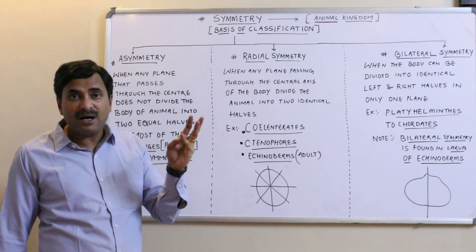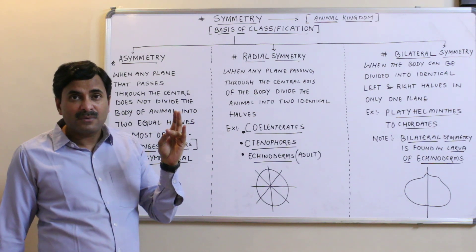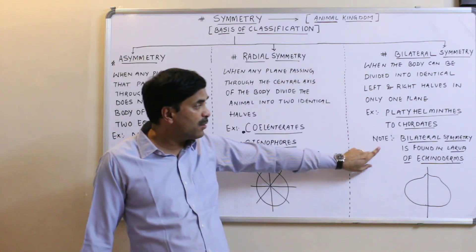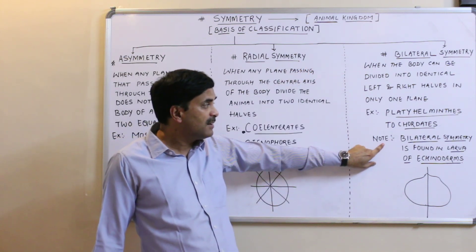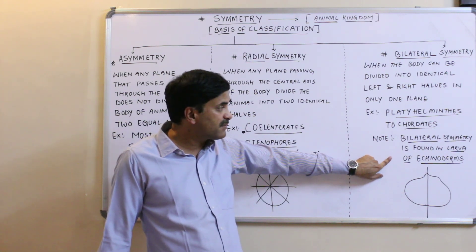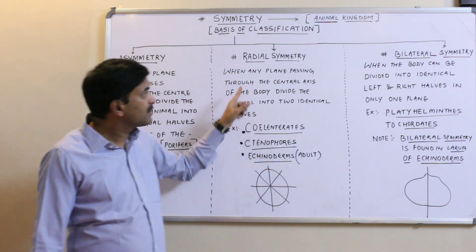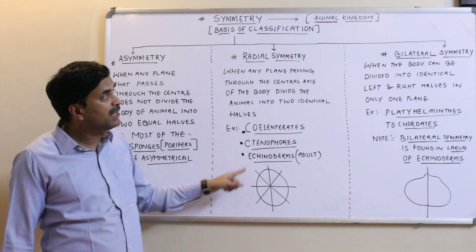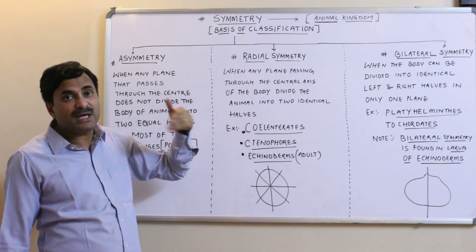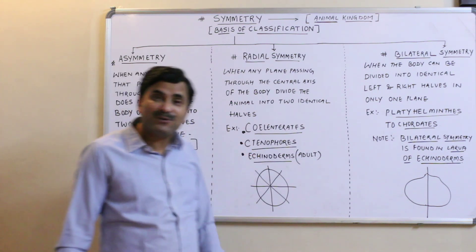...aschelminthes, annelida, arthropoda, mollusca, echinodermata, hemichordata, and all the chordates are having bilateral symmetry. The point to note is that bilateral symmetry is found in the larva of echinoderms, not in adult echinoderms, because adult echinoderms have radial symmetry. So these were the three types of symmetry used as the basis of classification in the animal kingdom. Thanks a lot for watching.